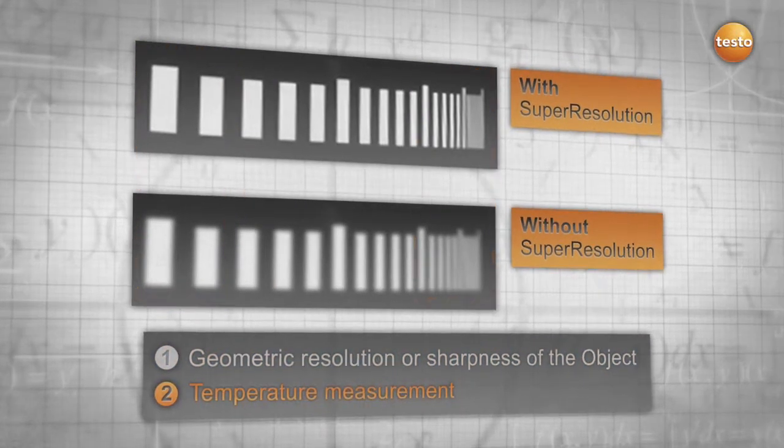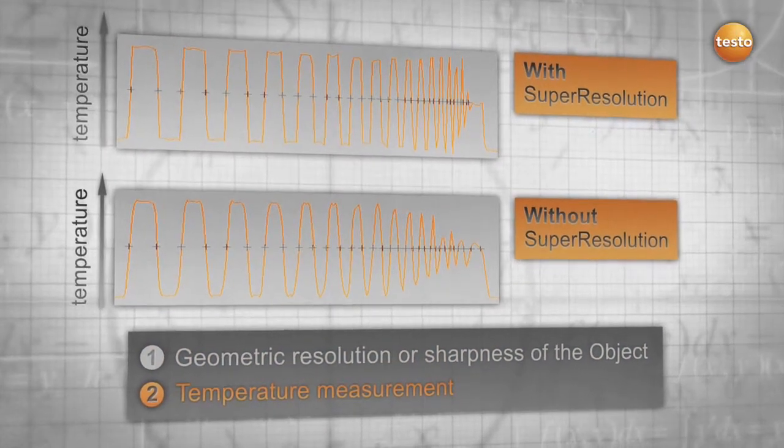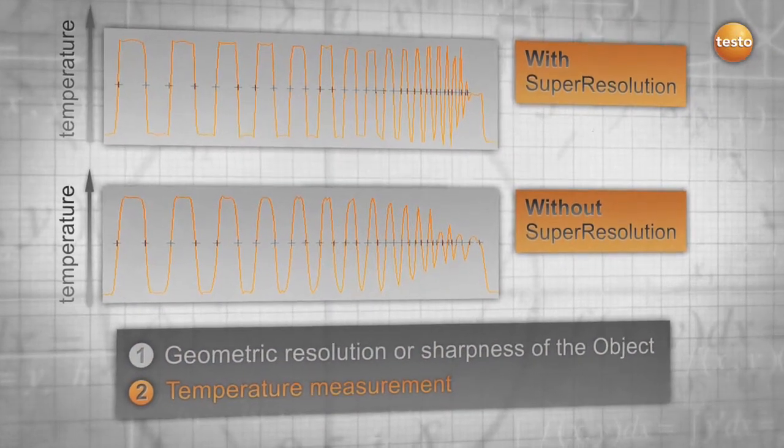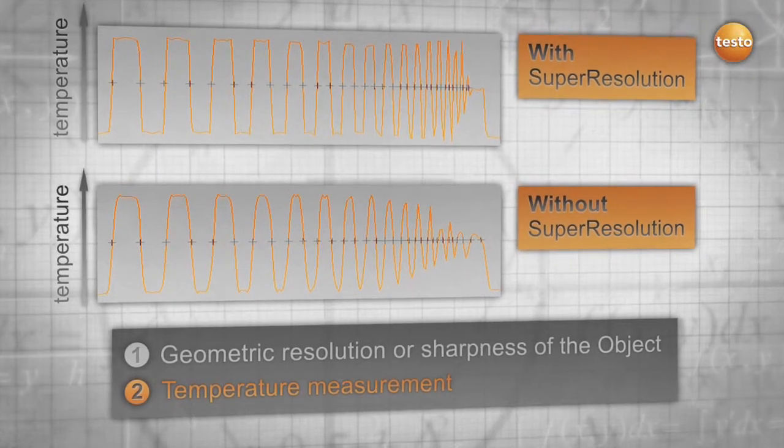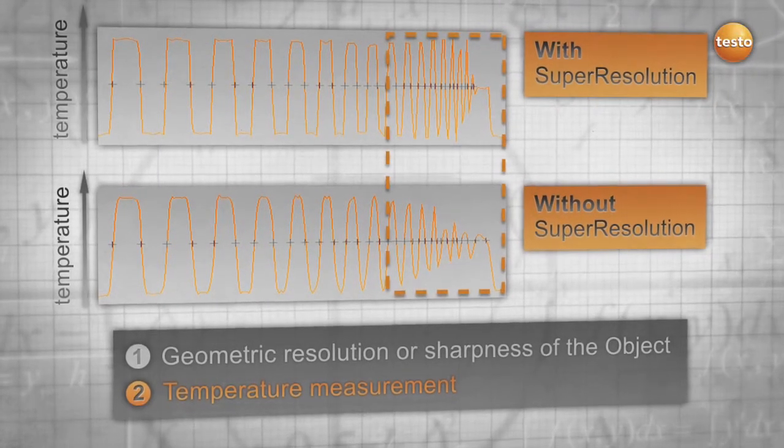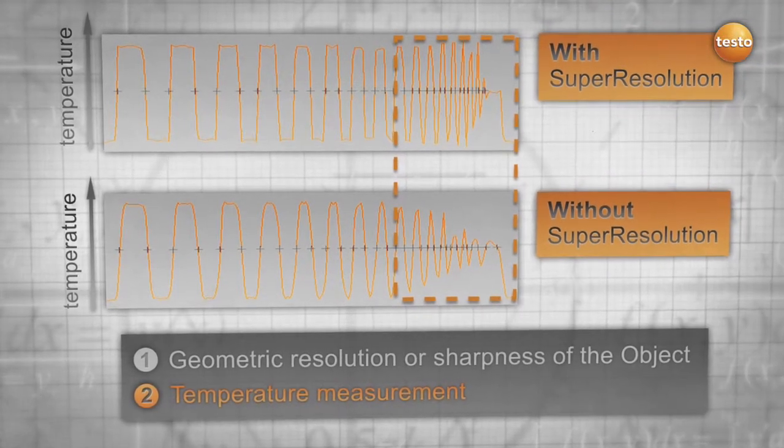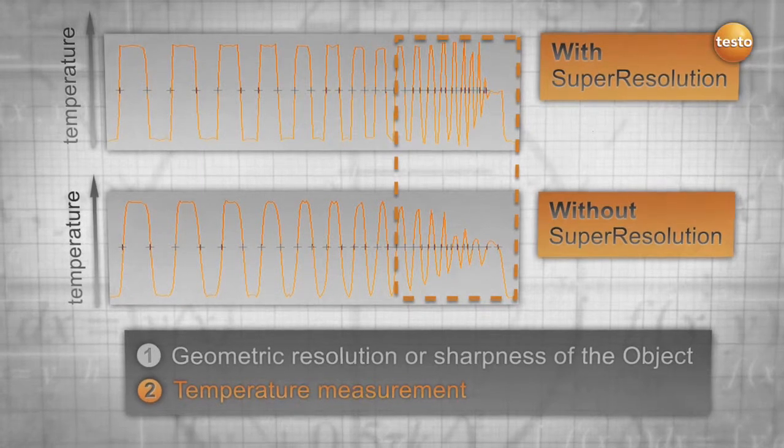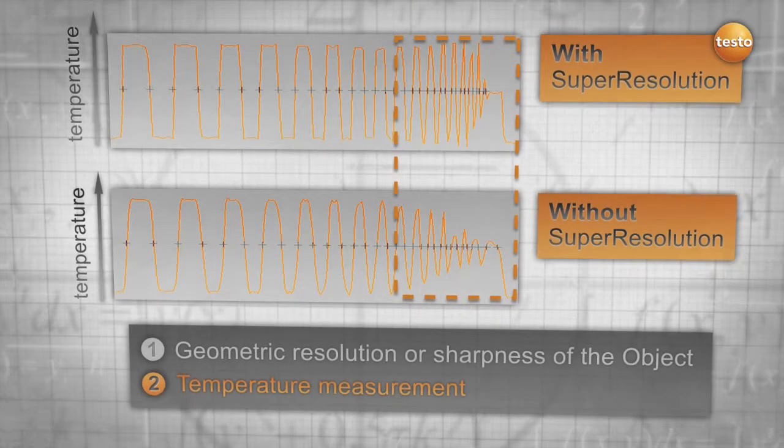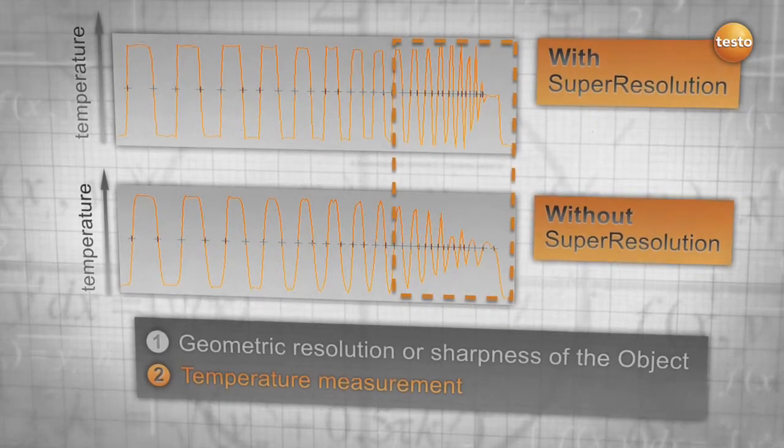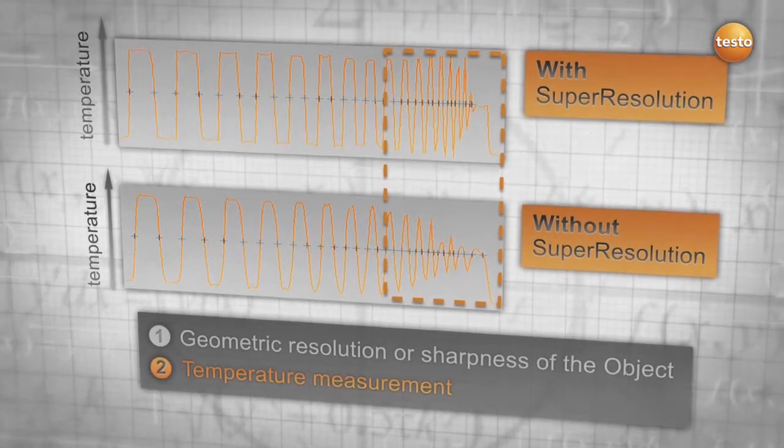A similar effect can be observed when we analyze the accuracy of the measured temperature. Without super-resolution, the temperature is not correctly displayed where the slots get tighter. And the thermographer might be in danger of logging in wrong numbers, which might lead to wrong conclusions. With super-resolution, the measurement, even of tiny structures, remains overall more accurate.